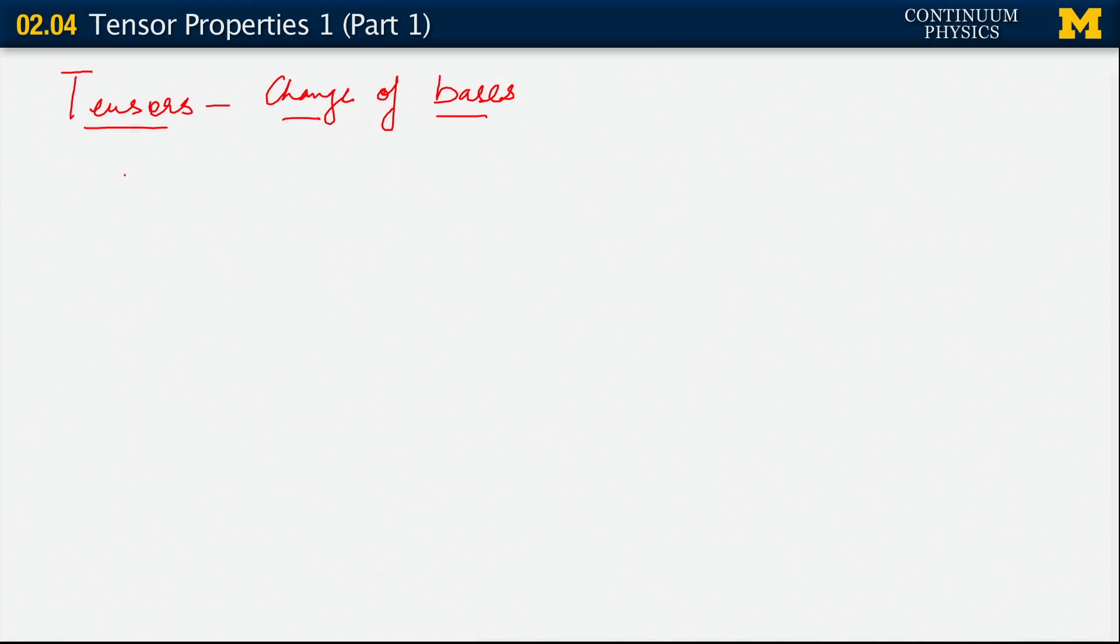So here's the idea. We have one basis here, and we'll denote it as usual, e1, e2, e3. We want to consider what happens if we have a different basis. And following the notation that we've adopted in the past, we call these vectors e1 bar, e2 bar, e3 bar.